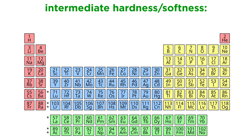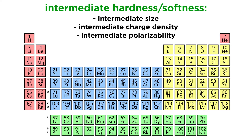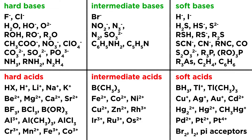There are also plenty of species that qualify as having intermediate hardness or softness, not leaning heavily in either direction. These have intermediate size, charge density, and polarizability. This is not always easy to predict, as even different oxidation states of the same element can differ dramatically, so it is best to learn through example. Here is a table depicting some common hard and soft acids and bases.